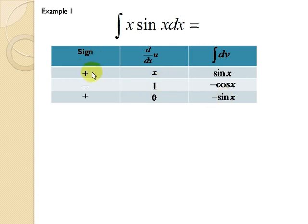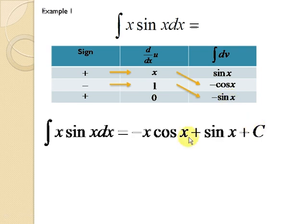Then you put a sign. The first column starts with the plus sign, then followed by the negative sign, then plus sign—you alternate the signs. And last will be multiplication of the plus sign with the x and the negative cos x, plus with the negative sign times 1 times negative sin x, plus C. Then this is the answer for integration of x sin x dx. That is negative x cos x plus sin x plus C.